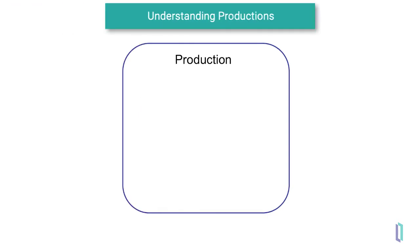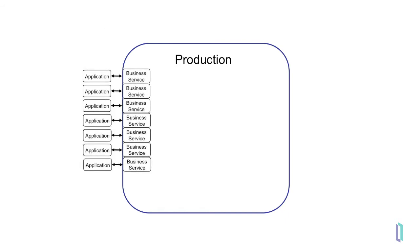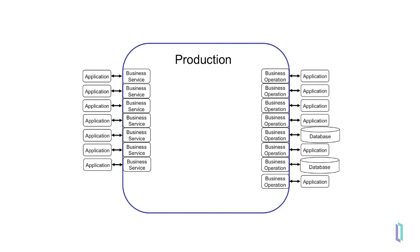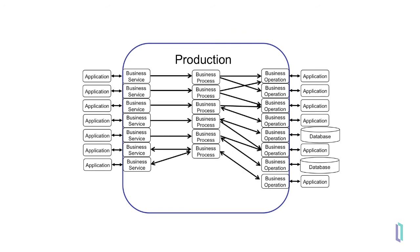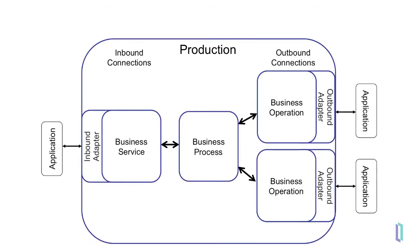A large production may have hundreds of components. It will typically have one business service for every application sending it data, as well as one business operation for every application receiving data or requests. The number of business processes depends on the design of the production and the logic needed for the particular integration solution. Let's review the high-level functions of each part of a production.